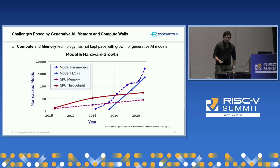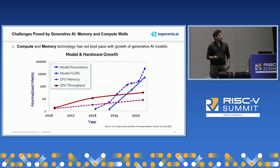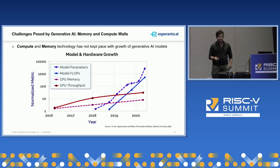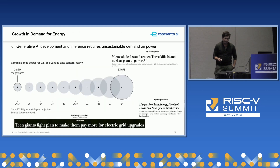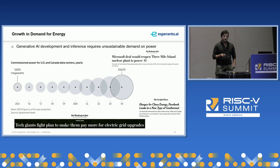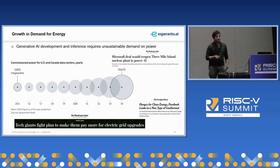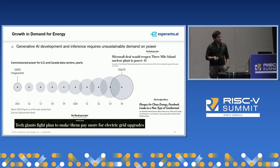As it's evident, the compute and memory technology has not been able to keep pace with the growth of Generative AI. The high demands of compute and memory of these models have a direct impact on a third very important factor, which is power.